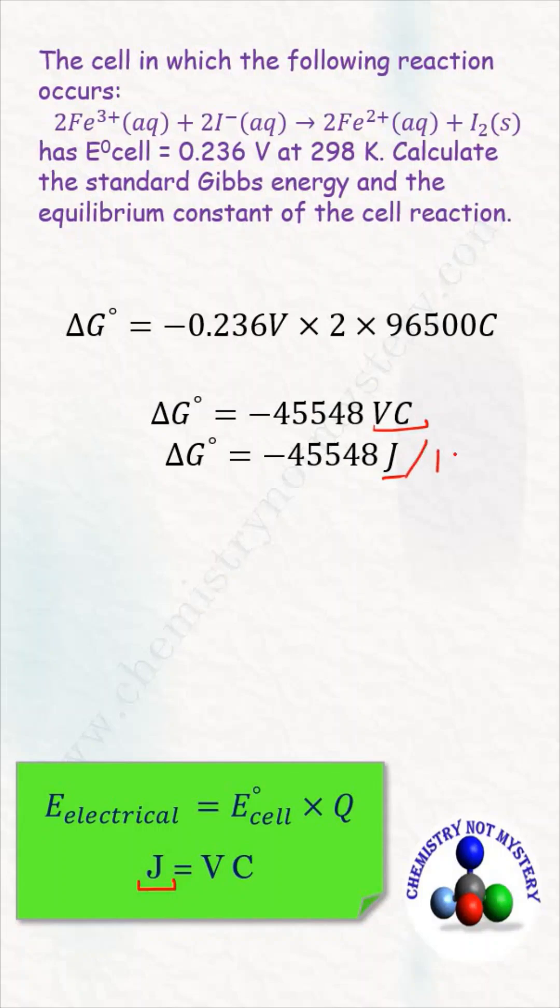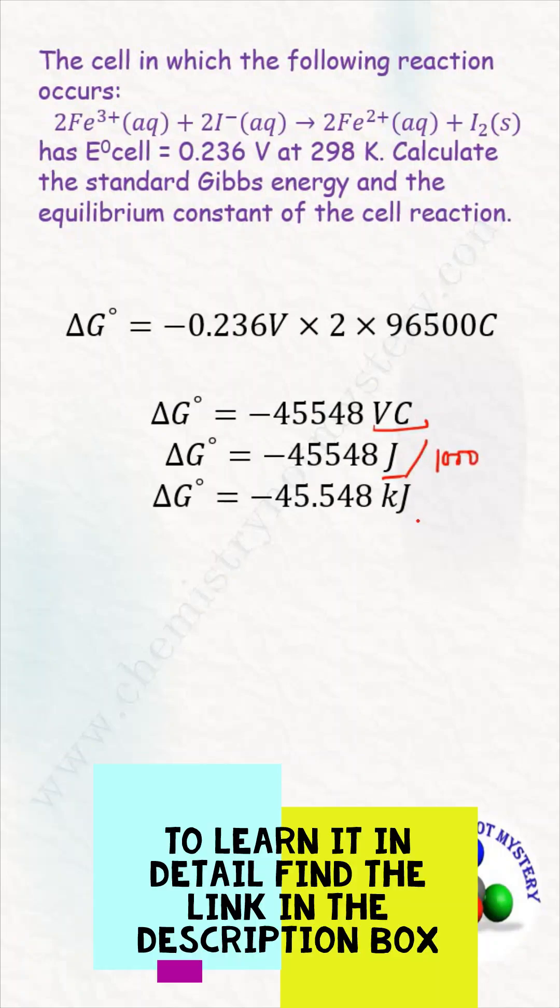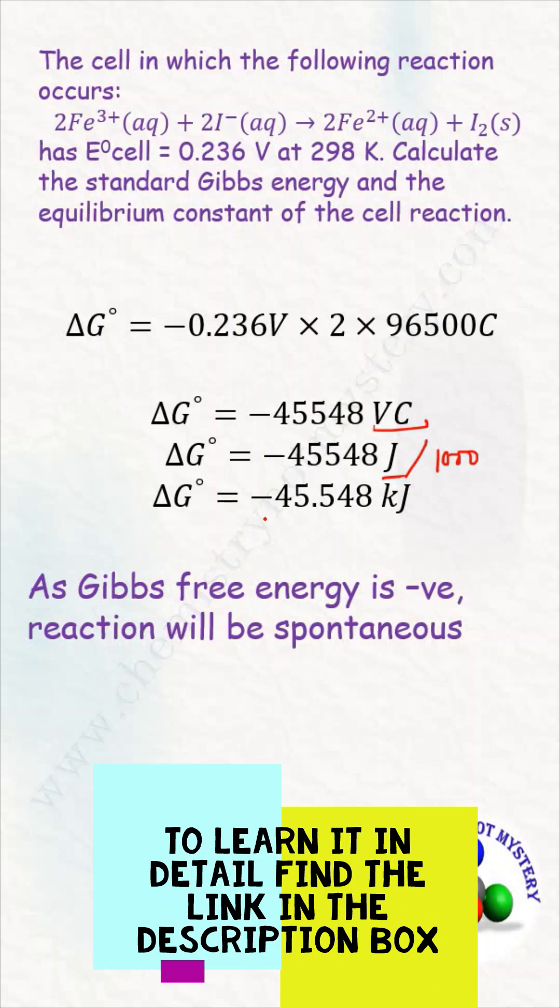When you replace the value of V·C with joules and divide by 1000, you will get the value in kilojoules. As the value of ΔG° is negative, the reaction will be spontaneous.